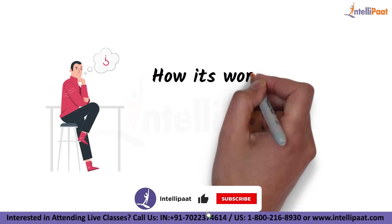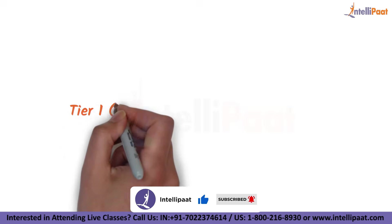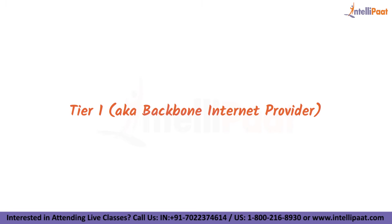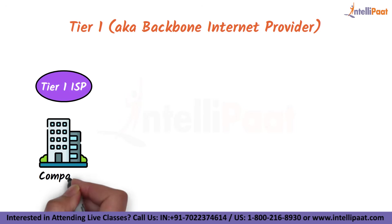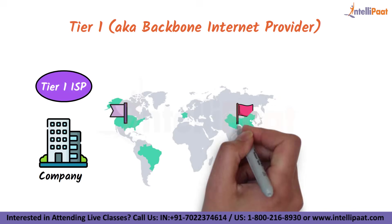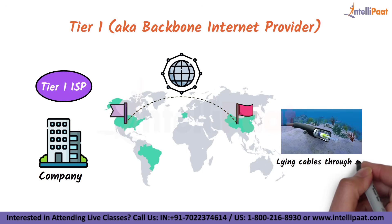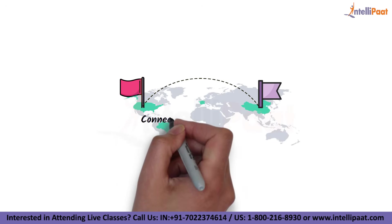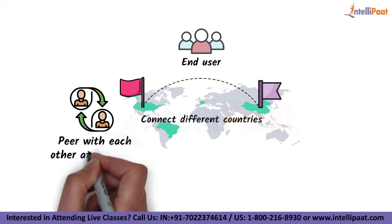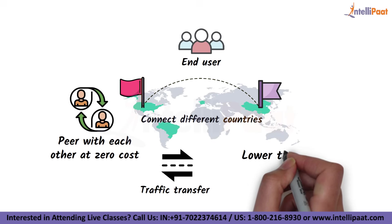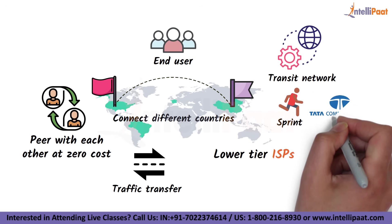ISP is divided into three tiers. Tier 1, also known as Backbone Internet Provider, is the largest ISP company. It connects different countries by laying line cables through the sea, and does not connect directly with end users. Tier 1 ISPs peer with each other at zero cost for traffic transfer, but charge lower-tier ISPs to transit their network — such as Sprint and Tata Communication.